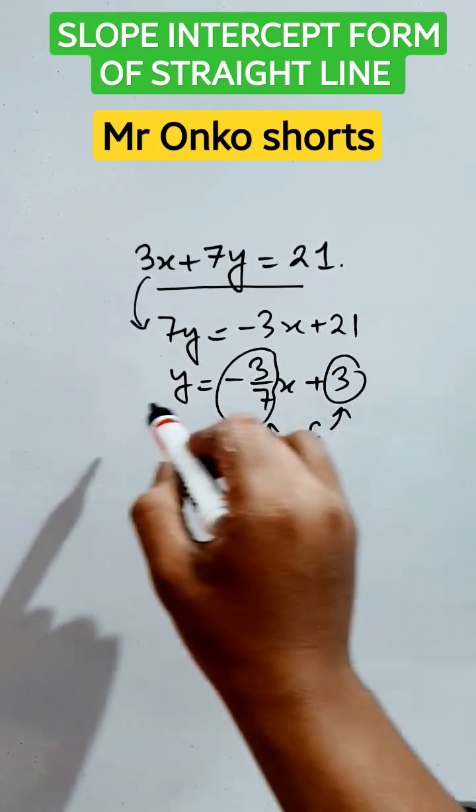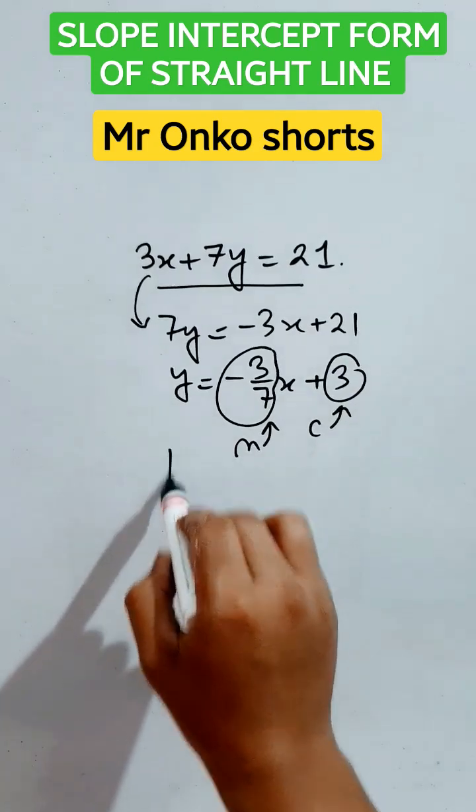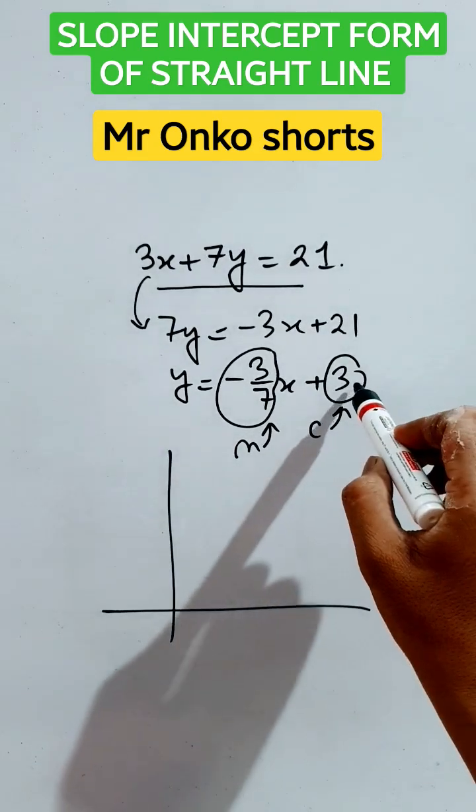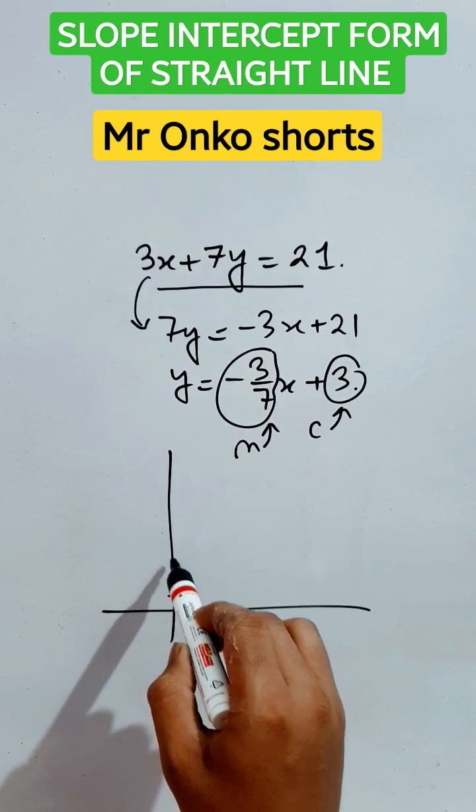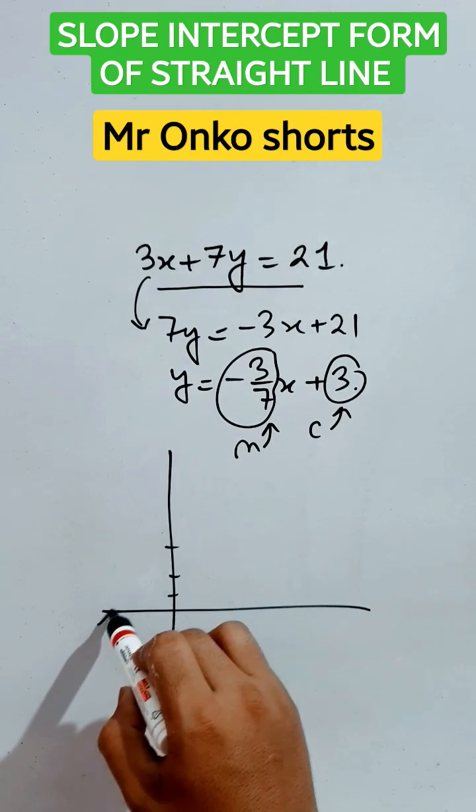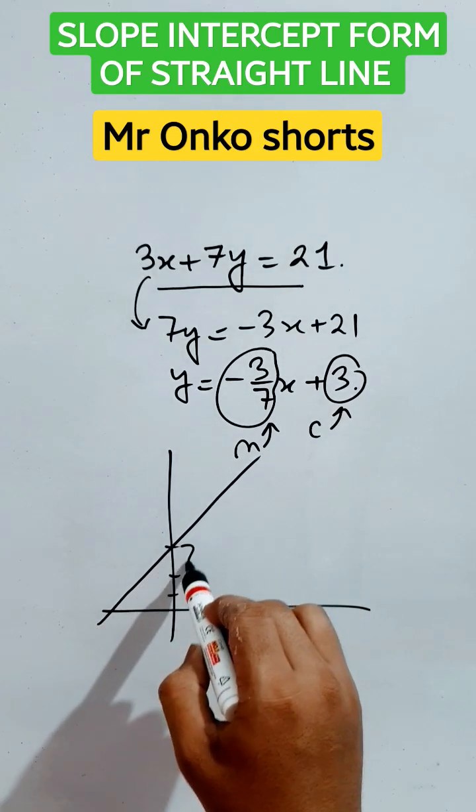Now draw the graph. Positive 3 is the y-intercept, so it's 1, 2, 3. The line will pass through this point (0, 3).